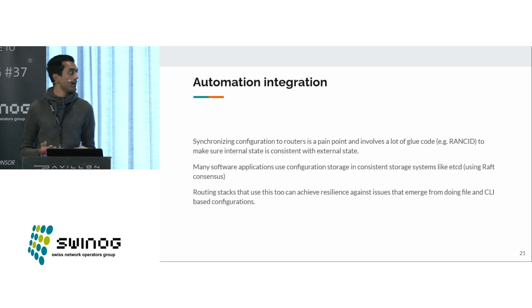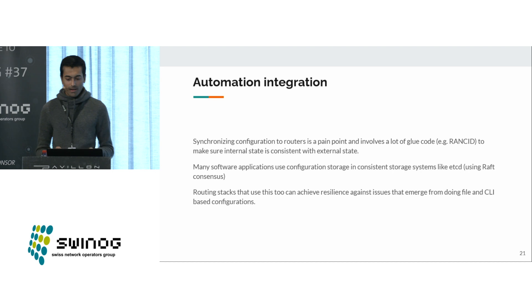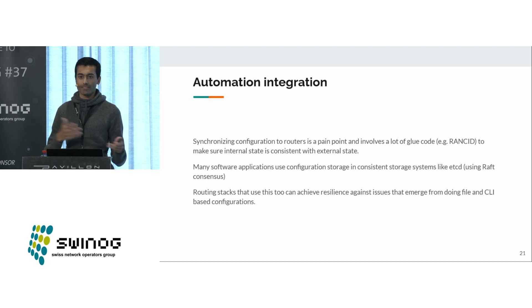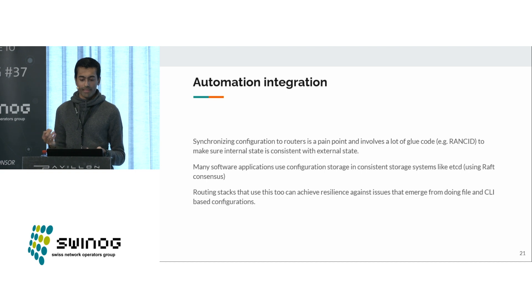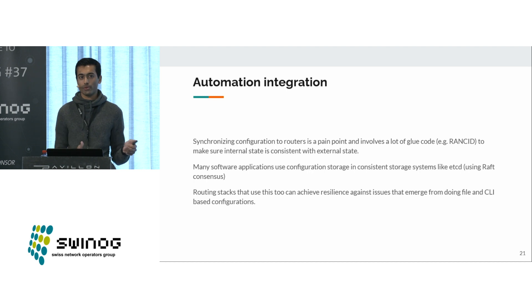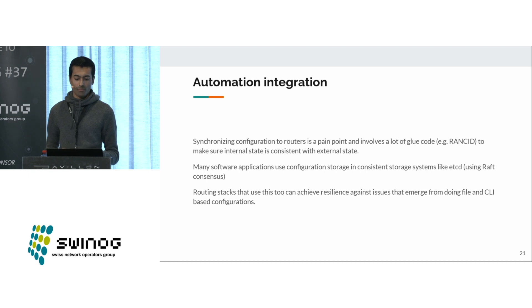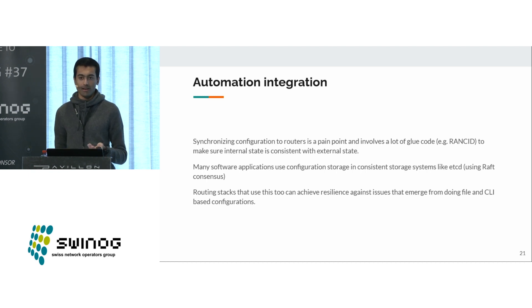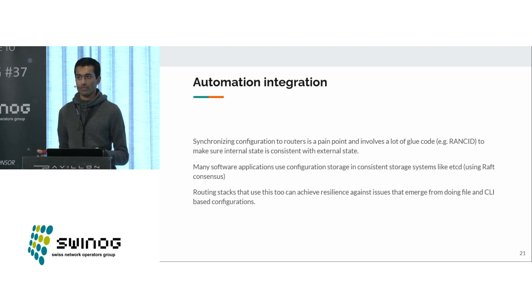And integration with automation systems: previously, a lot of networking systems used things like RANCID to synchronize state back and forth to understand what's running on the router. But in the direction we're going — storing configurations in version control and applying that programmatically — it would be better to have first-class support for storing a certain configuration version in some persistent database, like etcd, so that it can persist through restarts and you don't get issues with file permissions.